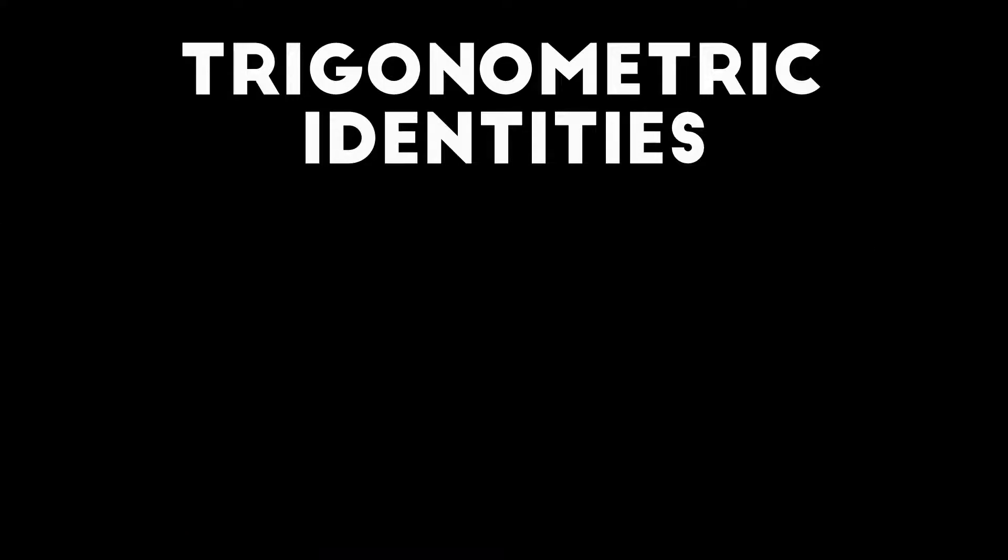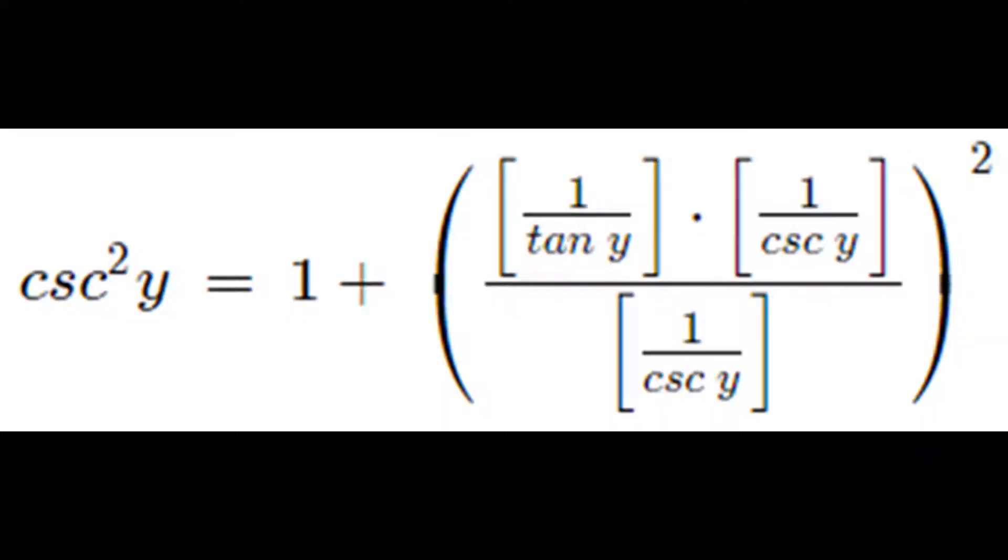I've been stalling for so long. Let's get on with the actual thing. We will now try to prove trigonometric identities. The first problem I'd like to tackle is cosecant squared y is equal to 1 plus 1 over tangent y times 1 over cosecant y divided by 1 over cosecant y close parenthesis to the power of 2. Now, I know you might be thinking, how is cosecant squared y equal to this monstrosity? Let's take it step by step.